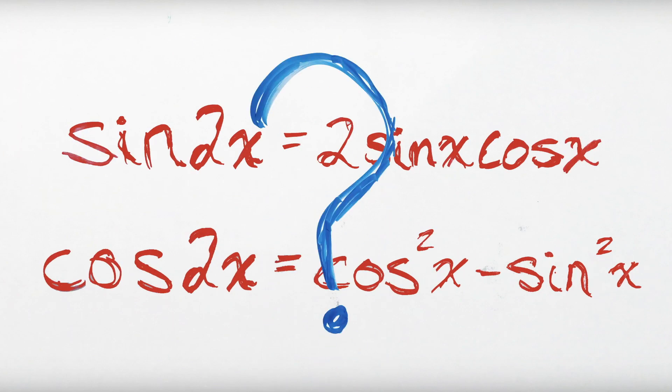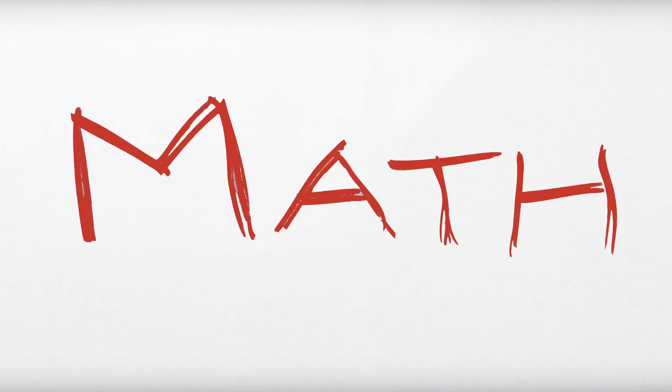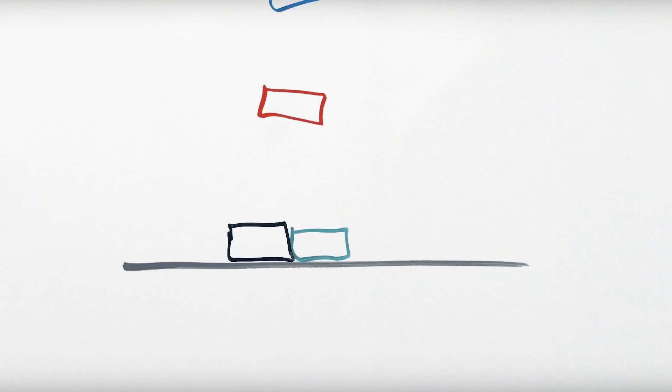So you've seen these identities before, but where do they come from? You know the drill with math. Everything's built on something else you just learned. And if you don't have a firm foundation, it all comes tumbling down.